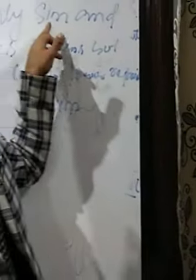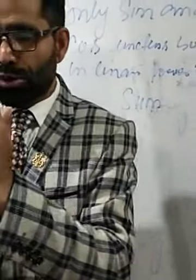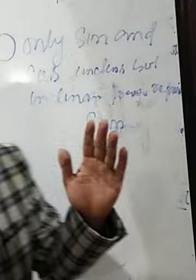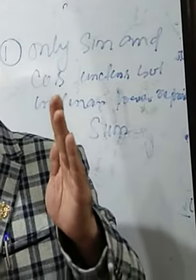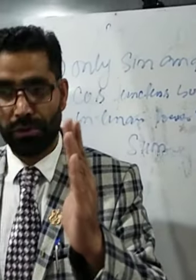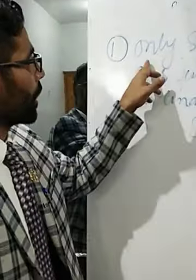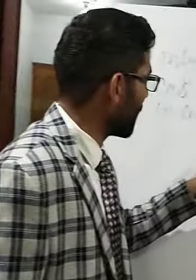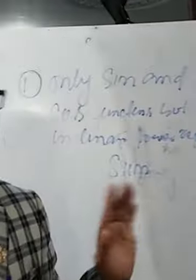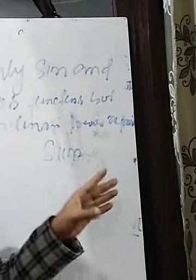Technique number two involves summation or subtraction. But first, let's apply Technique 1 to a numerical example, since such questions are frequently asked in entrance exams. The question is: which of the following represents SHM? Option A: sin³(ωt), Option B: cos³(ωt), Option C: tan(ωt), Option D: sin(ωt).